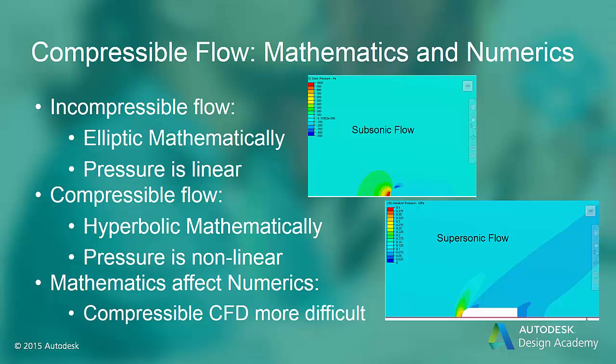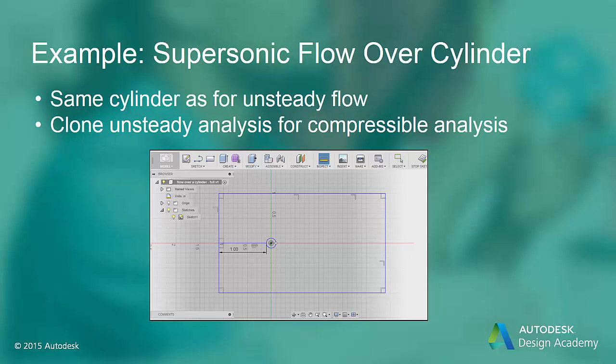The mathematical nature affects the numerical character of the discretized governing equations. Compressible flow numerical nature makes this type of problem more difficult to solve. For some compressible flow simulations, a transient solution may have to be used instead of a steady state solution just to control the development of the large gradients that occur. Also, because of these very large gradients, a finer mesh or smaller elements must be used.